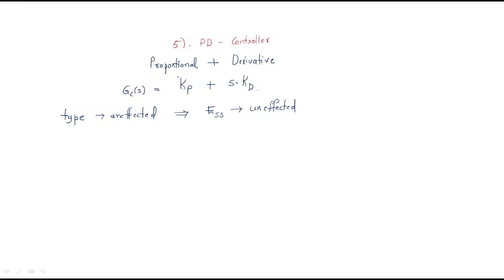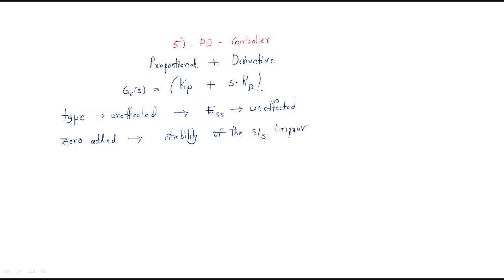Next, consider stability. Whenever you add the PD controller, you are adding a zero to the system. When a zero is added, the stability of the system will be improved. So the reason for stability improvement is that a zero is added to the system.